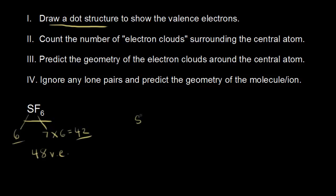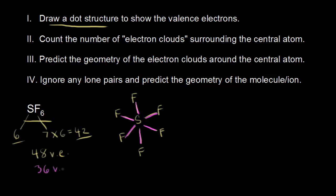Sulfur goes in the center, and we surround sulfur with 6 fluorines. Our next step is to see how many valence electrons we've shown so far. Counting the bonds: 2, 4, 6, 8, 10, and 12. So 48 minus 12 gives me 36 valence electrons left over, which we put on our terminal atoms, which are our fluorines.